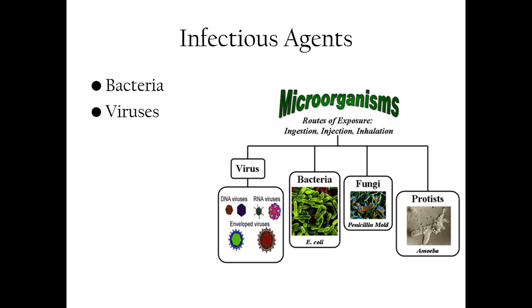Second, viruses — these are smaller than bacteria and need a host to reproduce. Examples include the flu virus and HIV. They are often transmitted through blood, respiratory droplets, or contact with contaminated surfaces.